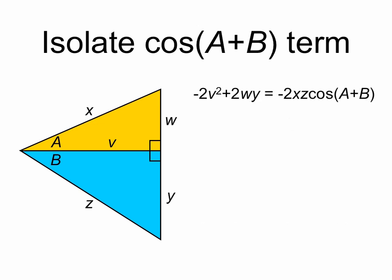So that's our result, and we can simplify it further by first multiplying through by negative 1 to give us 2v squared minus 2wy equals positive 2xz cosine a plus b. And dividing through by 2 leaves us with v squared minus wy equals xz cosine a plus b.